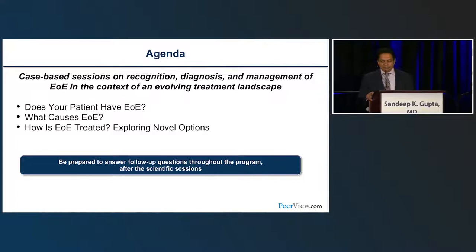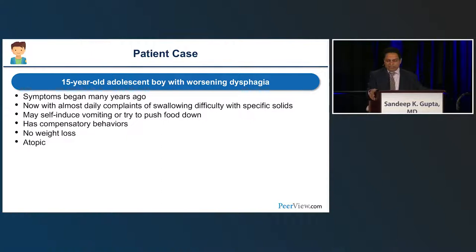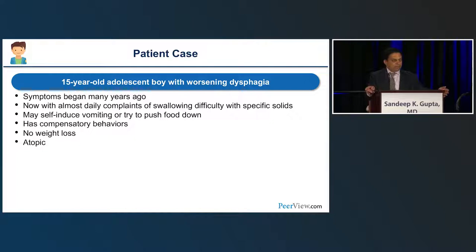I'll start the first segment: does your patient have EOE? The typical case is a 15-year-old coming to your clinic with a history of dysphagia. Many things can cause dysphagia, and this is how we start dissecting the history. Key bullet points help define the reason — at least making a differential diagnosis. His symptoms began many years ago — different from symptoms that began last night after pill ingestion as pill esophagitis. The duration has been many years, frequency is almost every day, and it happens with specific solids like meats, bread, and rice — not applesauce, pureed food, or liquids.